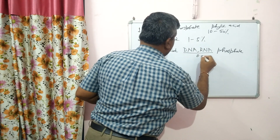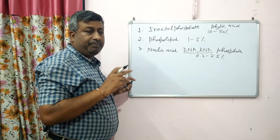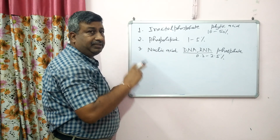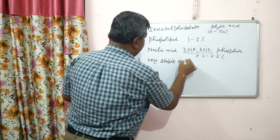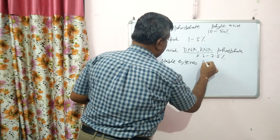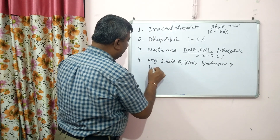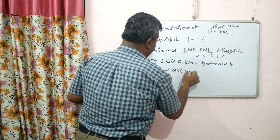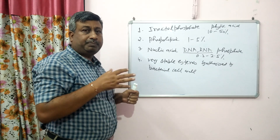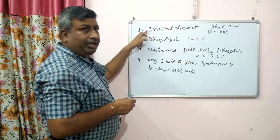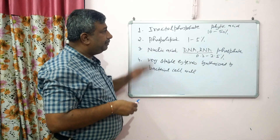In terms of quantities: phytic acid (inositol phosphates) constitutes about 10 to 50% of organic P in soil; phospholipids about 1 to 5%; and nucleic acids about 0.2 to 2.5%. So the maximum amount is phytic acid. This is an important examination question: which organic form is majorly present in soil? The answer is inositol hexaphosphate, that is phytic acid. There are also very stable esters synthesized by microbes, particularly present in bacterial cell walls.